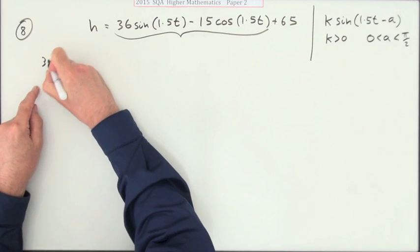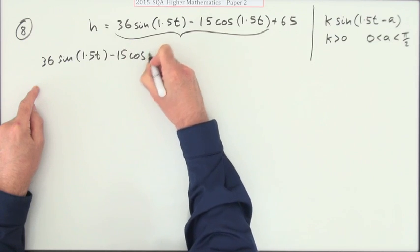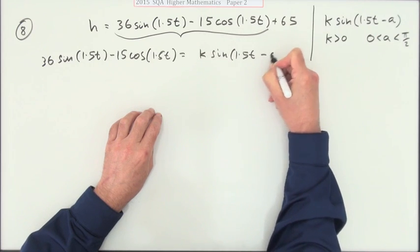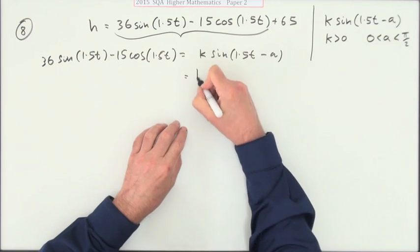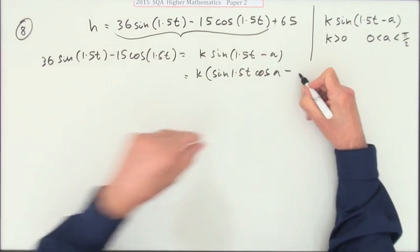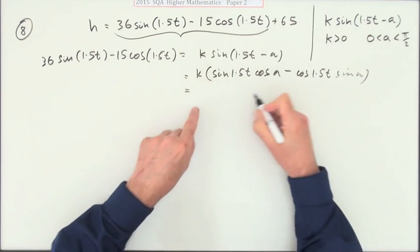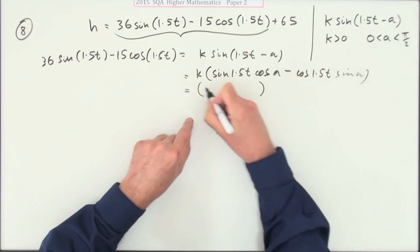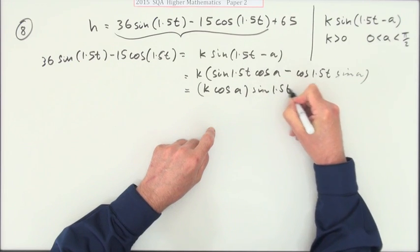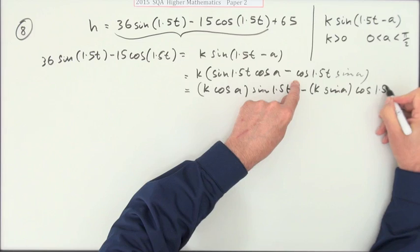Well, so we just start off. 36 sine 1.5t minus 15 cos 1.5t is to be written in the form of k sine 1.5t minus a. So you expand this. So we're going to use the sine 1.5t cos a minus, just look up the front, switch partners, cos 1.5t sine a. Then I like just to isolate the proper coefficients. So for sine t, I've got a coefficient of k cos a. Sine 1.5t minus k sine a of the cos term, cos 1.5t.